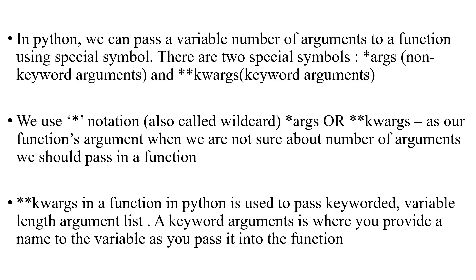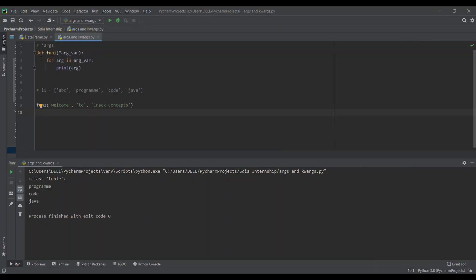We use these special symbols whenever we are not sure about the number of arguments. Keyworded arguments are used whenever you want to provide a name to the variable as you're passing it to the function — whenever you want to pass key-value pairs. Now we'll see some examples to understand this better. Here I have declared one function named function one.